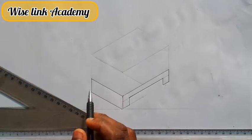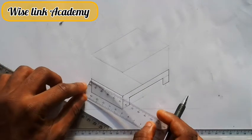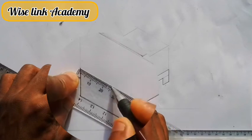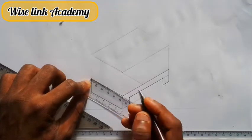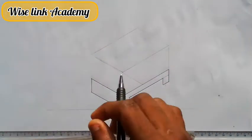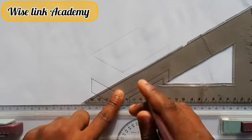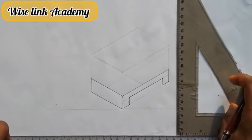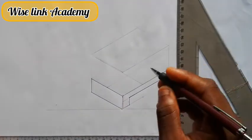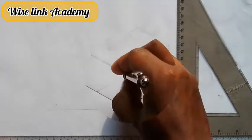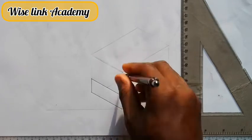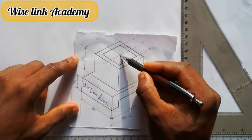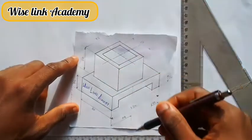Next up, from here to here is 50. Half of 50 is 25. At that point, I will take my T-square this way and draw a faint line downward. As you can see, they both meet at this point. That point is the point you are seeing up here.